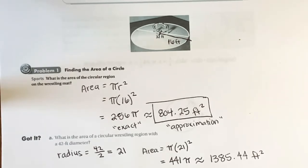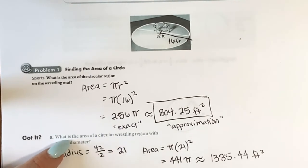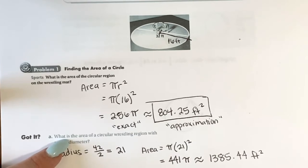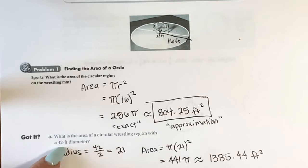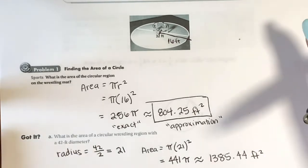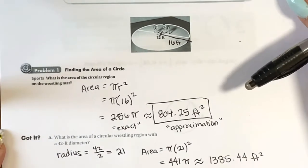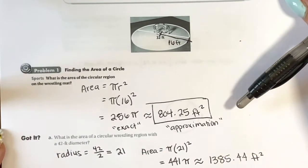So that is the area of a circle. Pay attention to whether they give you a diameter or a radius, because if they give you the diameter, you need to cut it in half. A common mistake is that students go too quickly and plug the 42 in instead of cutting it in half first. So just be careful reading through the problem and you should be fine.